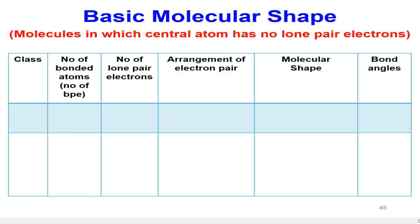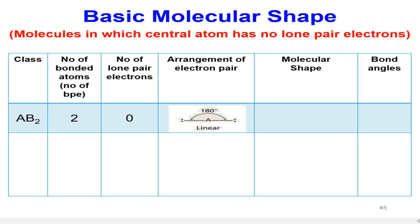For the linear molecular shape, the class is AB2, meaning there are two bonding electrons around the central atom and no lone pair electrons. The electron pairs are arranged as far apart as possible to minimize repulsions, according to VSEPR theory, so the bond angle is 180°.